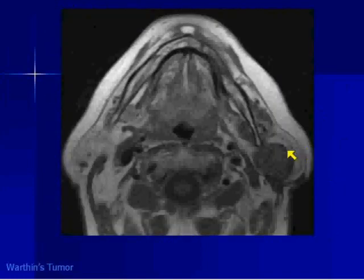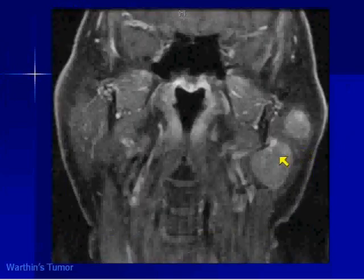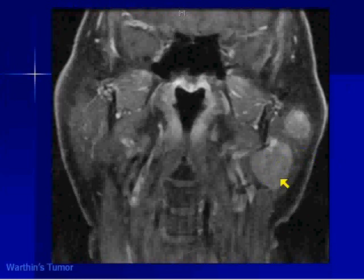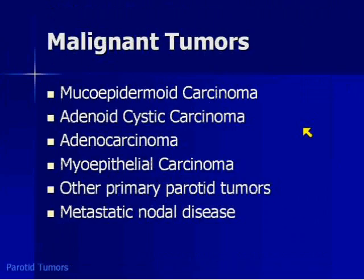Here's an example of a well-defined lesion — this one happens to be solid — in the tail of the parotid gland. This is a Warthen's tumor. There's no cystic element in this one, but it could be cystic, solid, or combined. Same patient: it's nicely enhancing, and you see a second lesion. He's a smoker, he's an older guy — this is more consistent with Warthen's tumor.